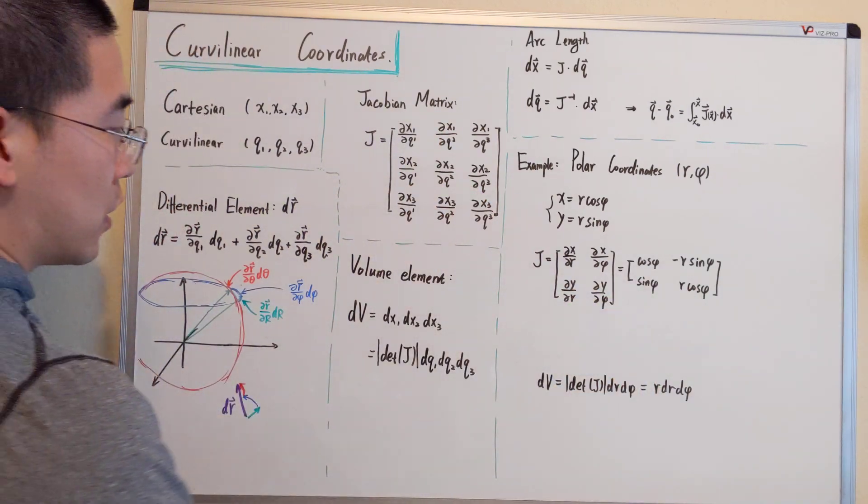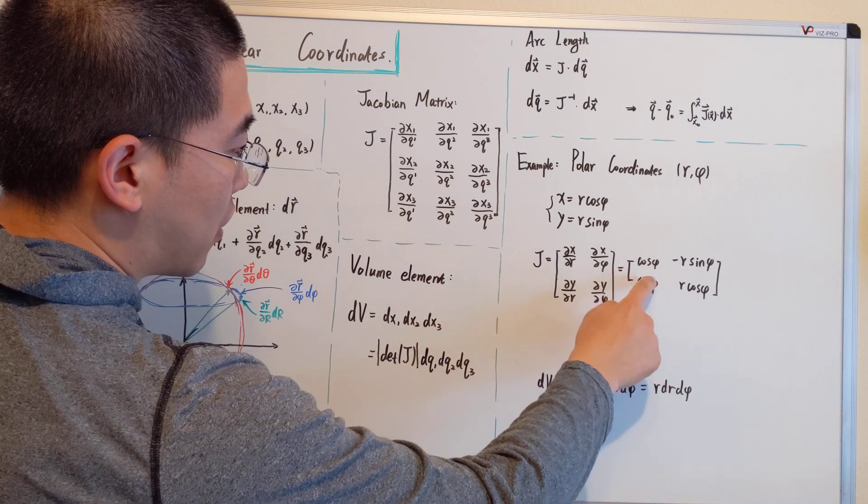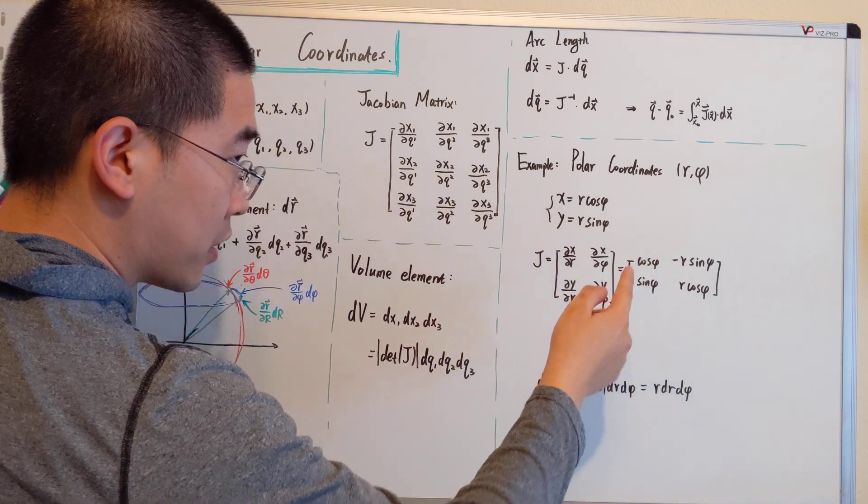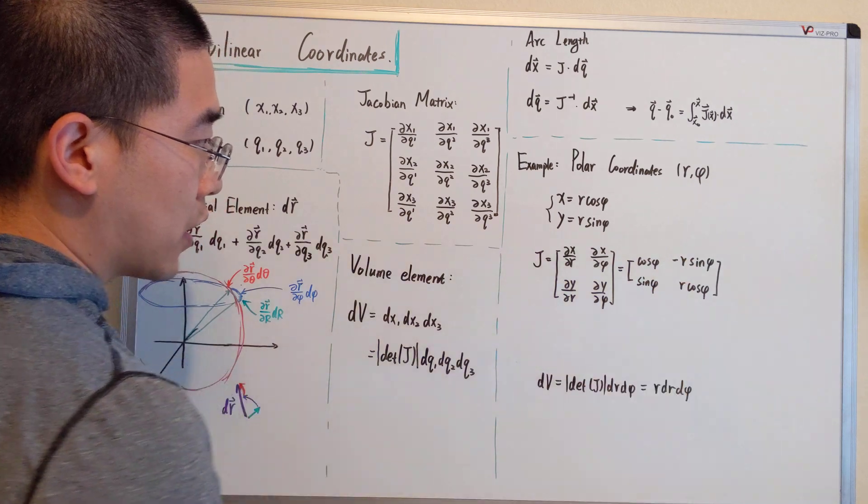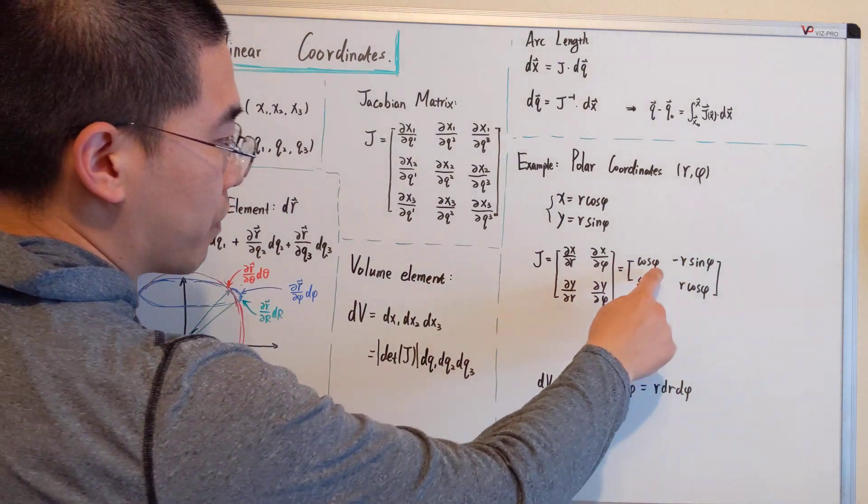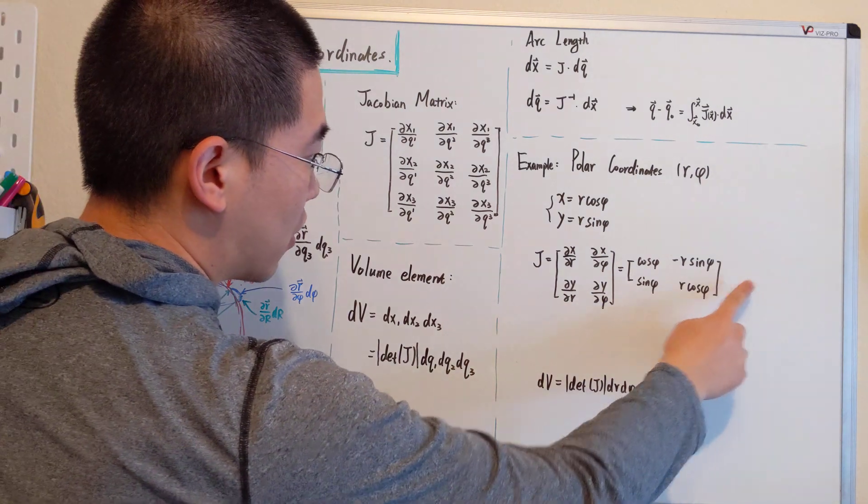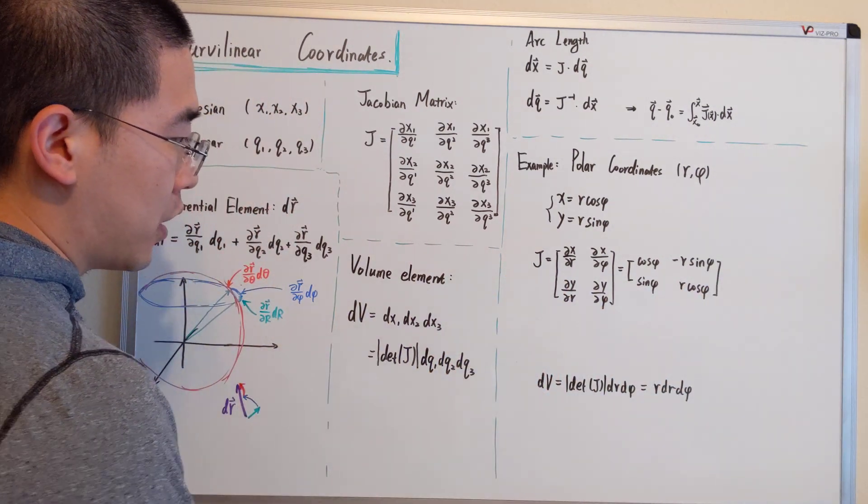The determinant is trivial to calculate. It will become r cosine theta squared plus, basically minus, so positive. It will become r sine theta squared. So it will be r cosine theta squared plus sine theta squared, which will be r. So the determinant of J will be r.